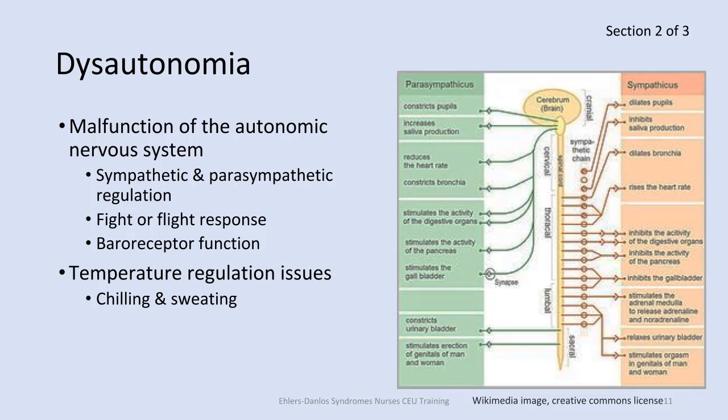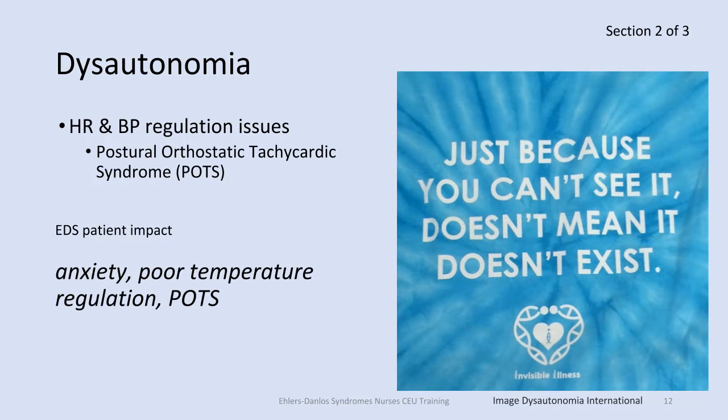In dysautonomia, this system is dysfunctioning. Your temperature regulatory systems may be off, your fight-or-flight system may be off, and you can have an alteration in your baroreceptor function. This can be extremely disruptive to a person's life. Dysautonomia is usually neuropathic in nature, from nerve damage. However, in the case of EDS, it's an overactivity of the autonomic nervous system — so it is secondary, due to the EDS.